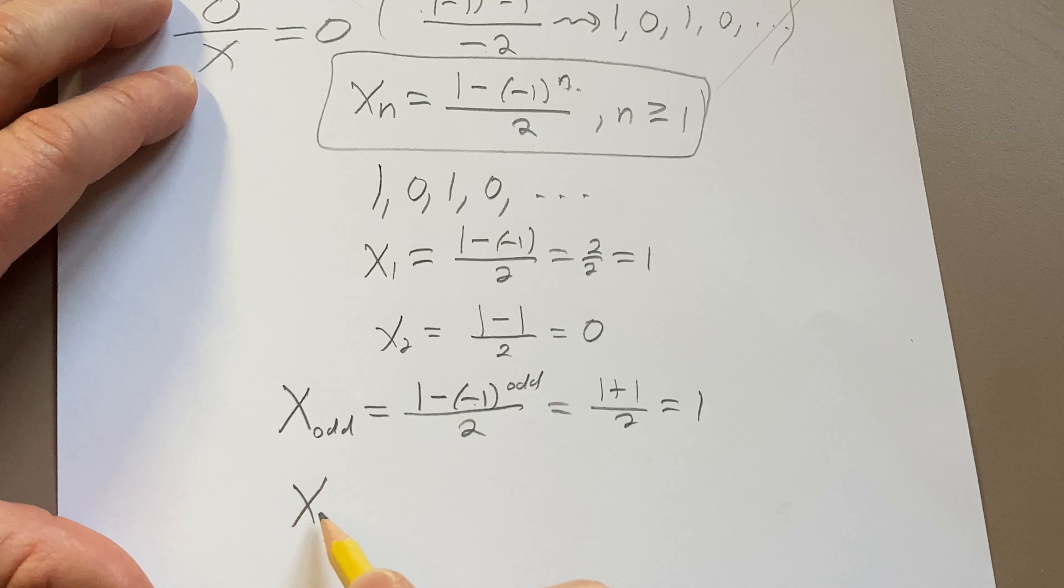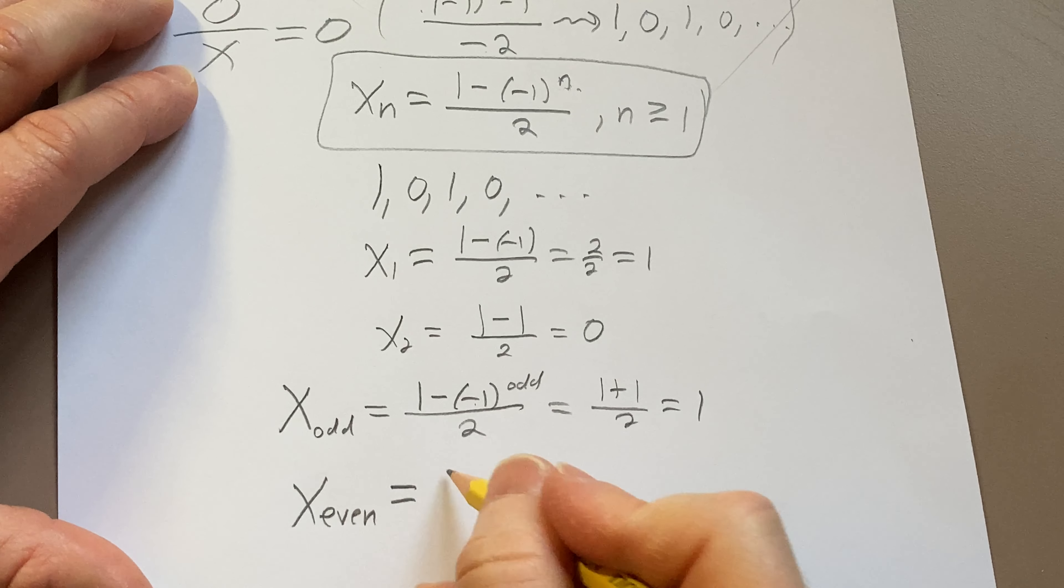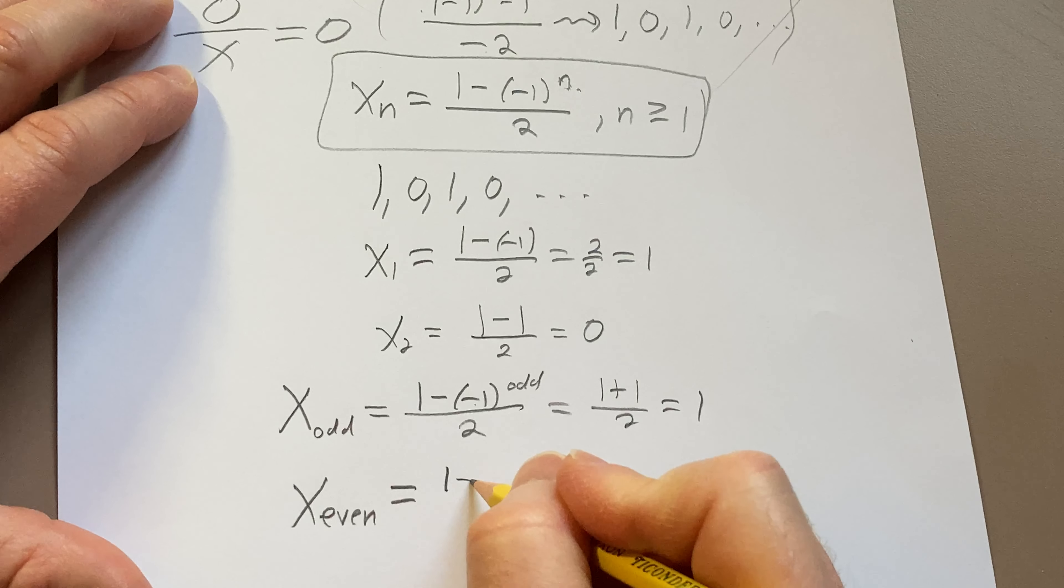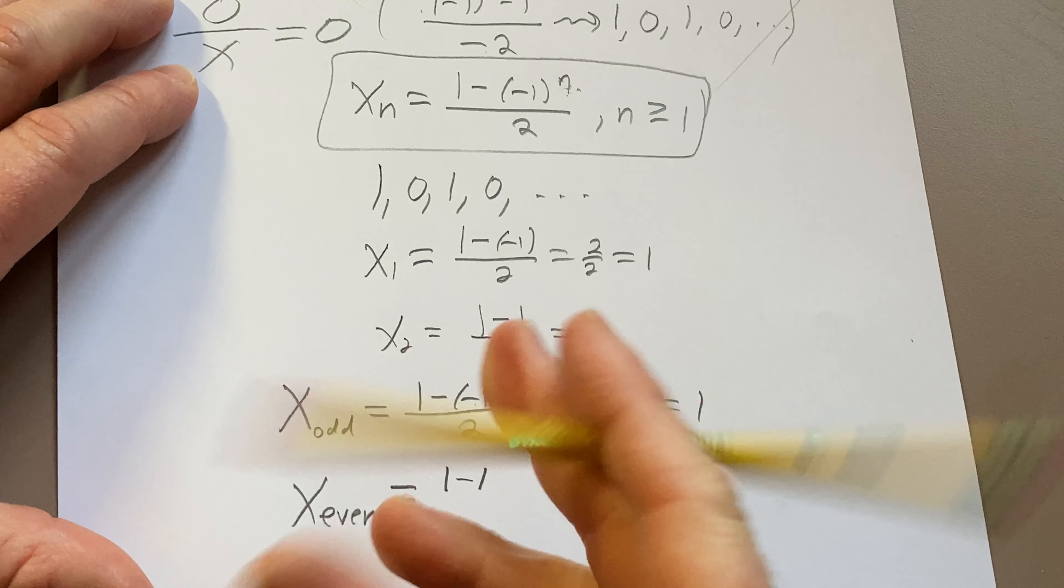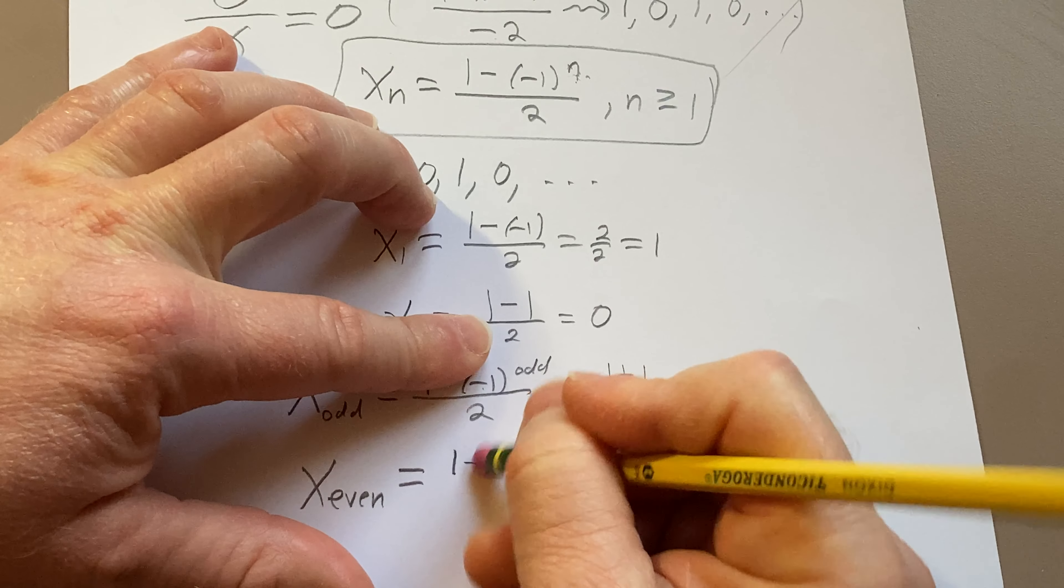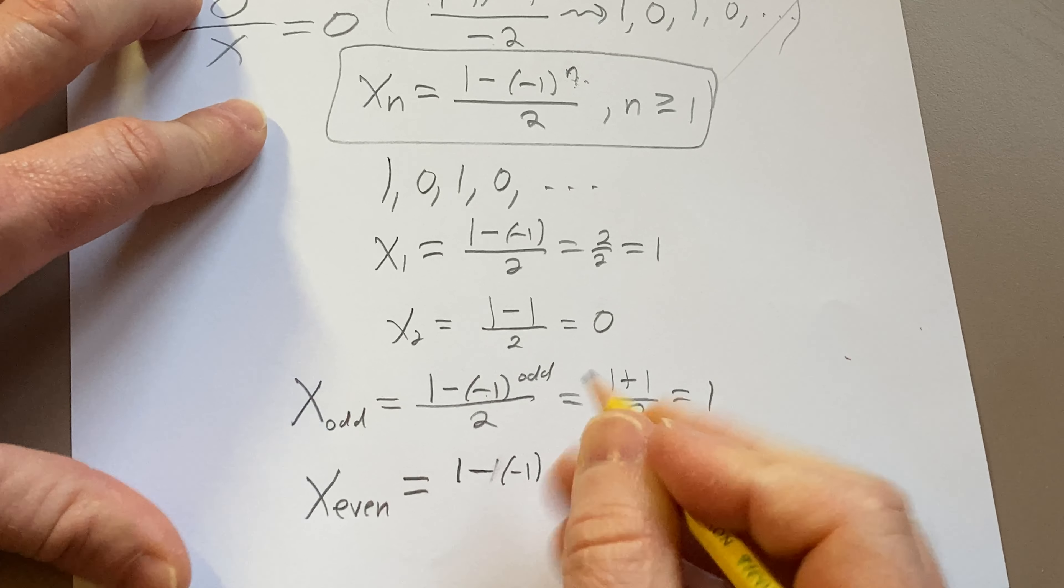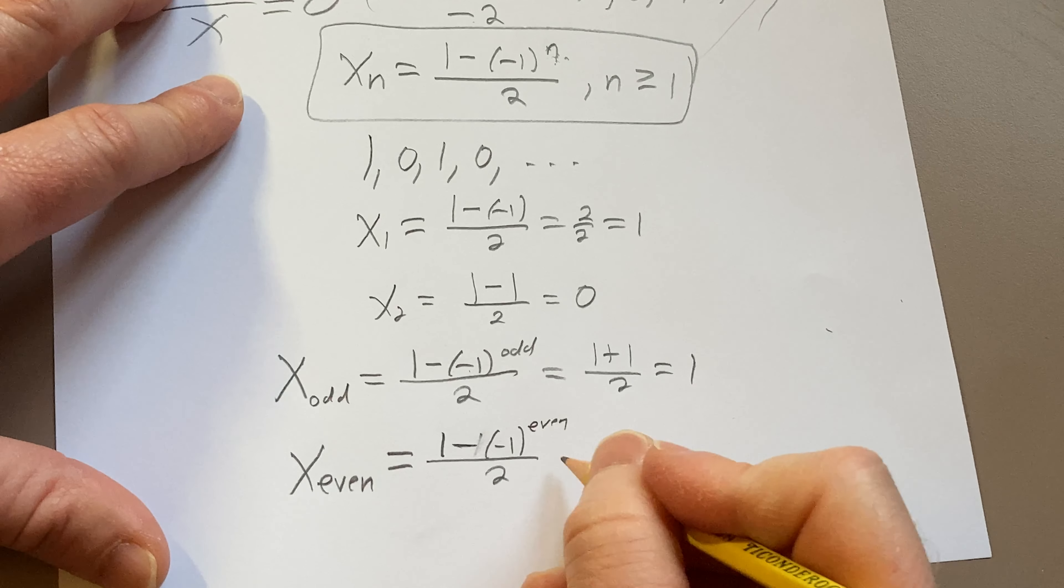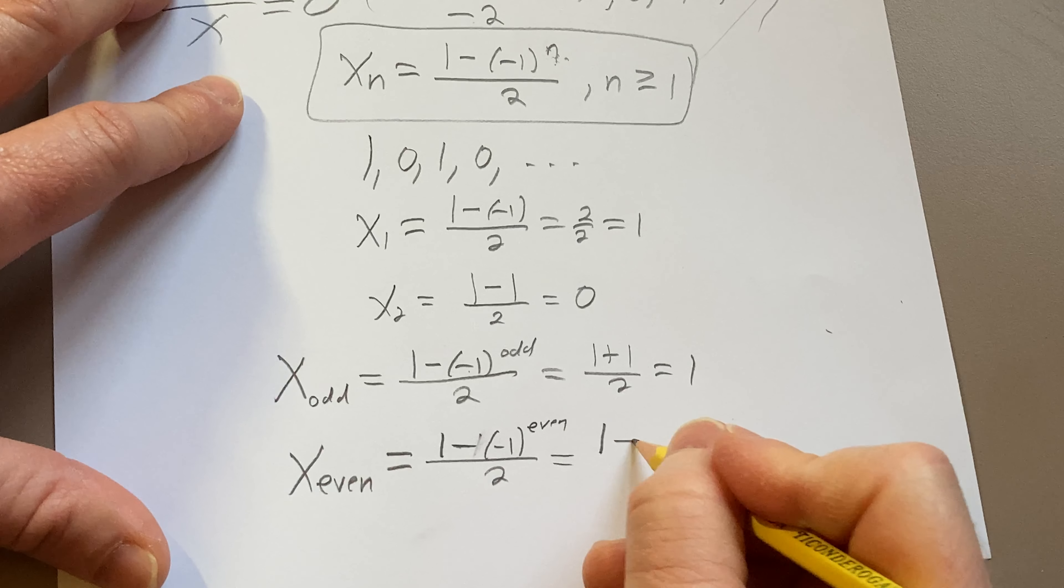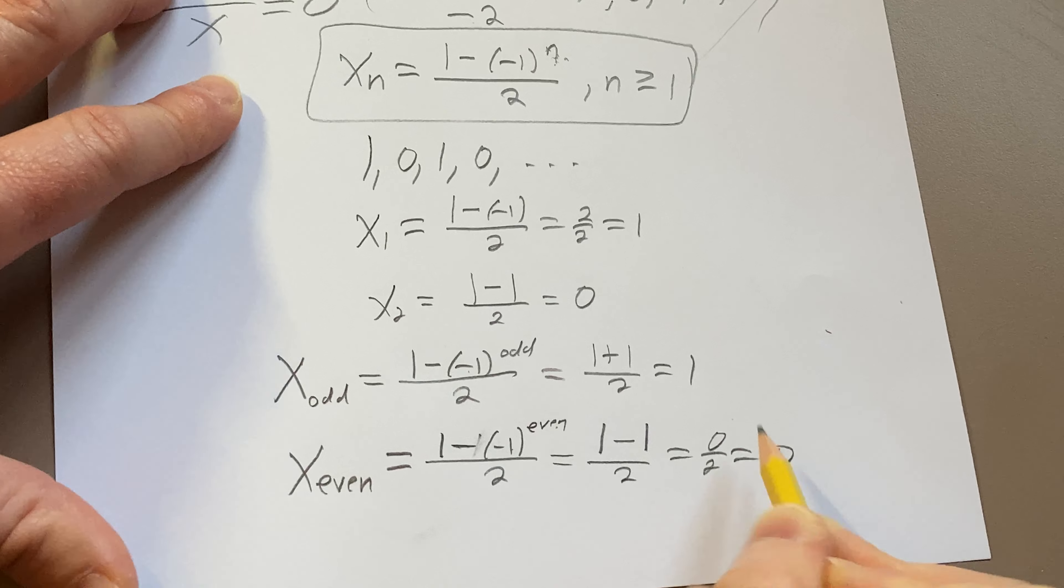And we have x_even. That's going to be 1 minus 1, because it's even, right, because it's, let me show the extra step here. So it's [1 - (-1)^even] / 2, which is going to be 1 minus 1, because -1 to an even is positive 1. So it checks.